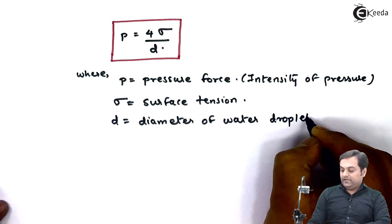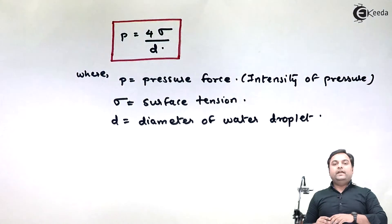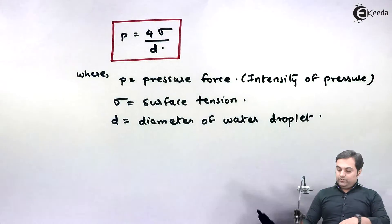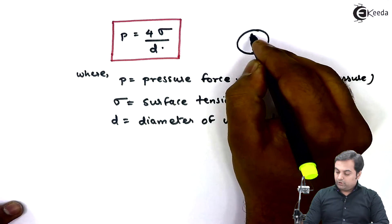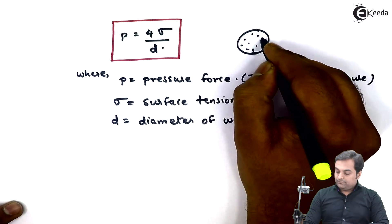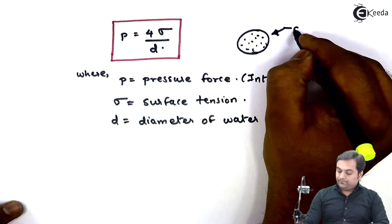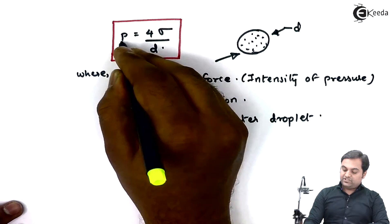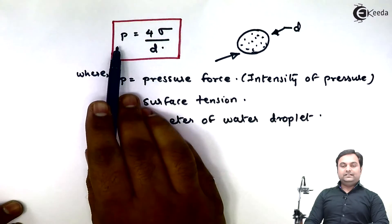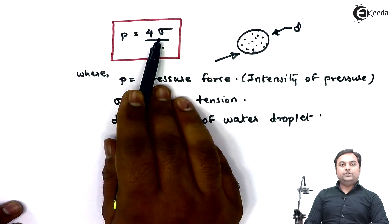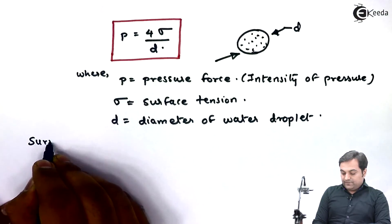This formula applies to any liquid droplet. If we have a liquid water droplet having diameter D over which pressure intensity P is acting, we can use this formula to calculate the surface tension.